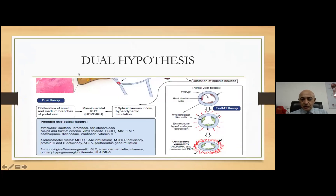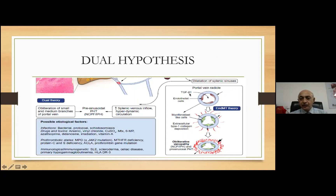There is a dual hypothesis. Most believe that something occurs within the medium and small branches of the intrahepatic portal veins, either because of infection in a patient who has a prothrombotic state coupled with immunological problems — all these conspiring to lead to blockage of the portal vein, called obliterative phlebopathy. Or there may be a mechanism where the problem starts within the endothelial cells of the portal venous radicals, producing TGF-beta which leads to stimulation of myofibroblast-like cells, leading to deposition of fibrous tissue in and around the portal vein — obstructive portal vasculopathy.